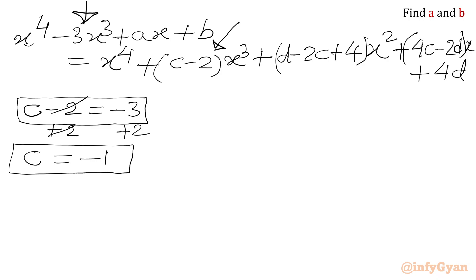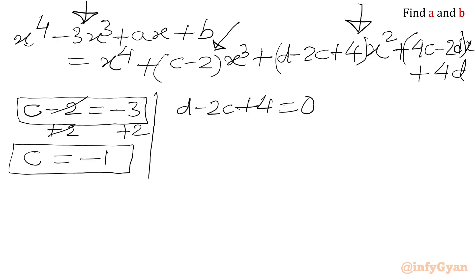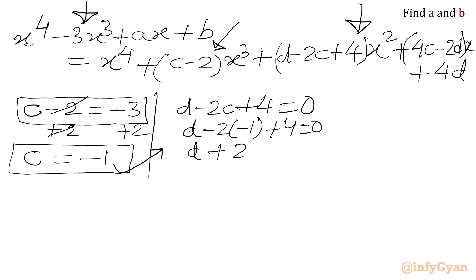Now we will compare the coefficient of x² on both sides. In the left hand side it is missing, so we consider the coefficient to be 0. So we write d minus 2c plus 4 equal to 0. Substituting c equal to minus 1: d minus 2(minus 1) plus 4 equals 0, giving d plus 2 plus 4 equals 0, so d plus 6 equals 0, therefore d equals minus 6.